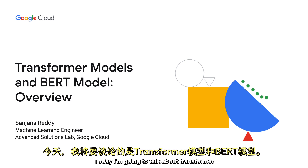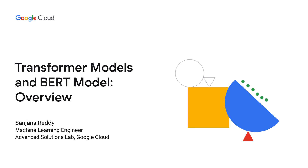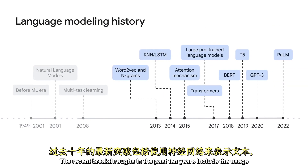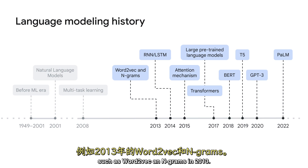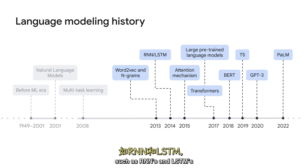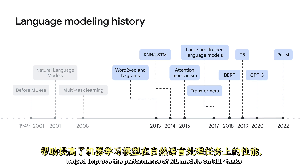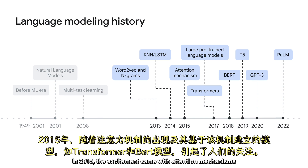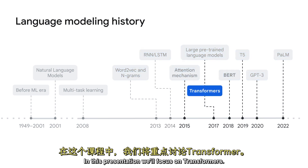Today, I'm going to talk about transformer models and the BERT model. Language modeling has evolved over the years. The recent breakthroughs in the past 10 years include the usage of neural networks to represent text such as Word2Vec and N-grams in 2013. In 2014, the development of sequence-to-sequence models, such as RNNs and LSTMs, helped improve the performance of ML models on NLP tasks, such as translation and text classification. In 2015, the excitement came with attention mechanisms and the models built based on it, such as transformers and the BERT model.